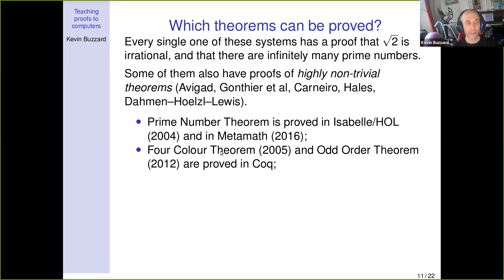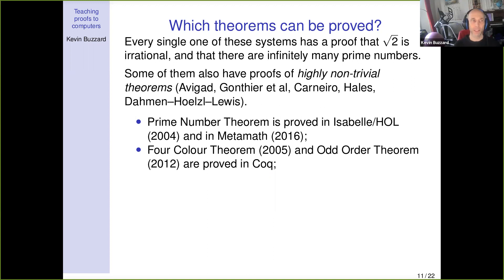Two much bigger theorems: the Four Color Theorem uses some tricky but low-level mathematics to reduce the proof to verifying that about 2,000 graphs can't be colored. The original proof used a program that could have had bugs, but Georges Gonthier and collaborators proved the Four Color Theorem in Coq using a proof-checking system. Gonthier then went on to verify the Feit-Thompson odd order theorem: every group of odd order is solvable.